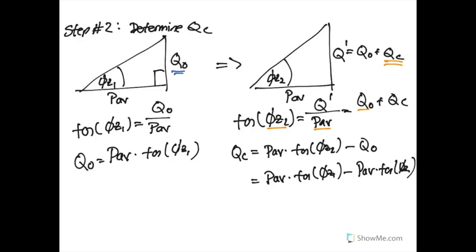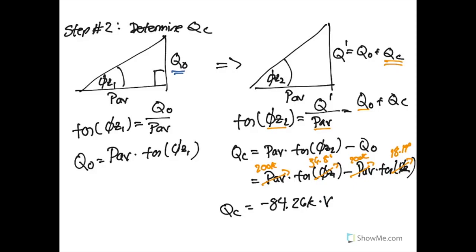For Qc, the original real power was 200 kilowatts, φZ1 was 36.8 degrees, and φZ2 was 18.19 degrees. Plugging in these values, we find that the reactive power due to the capacitor should be negative 84.26 kilovars.